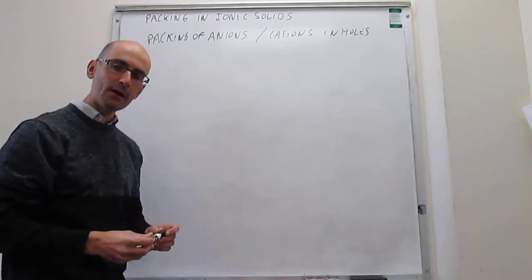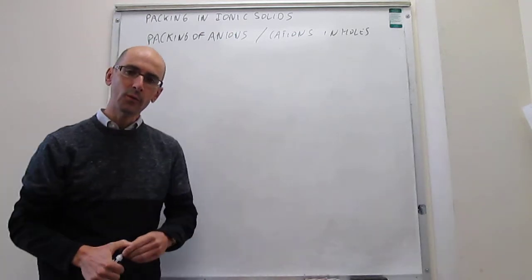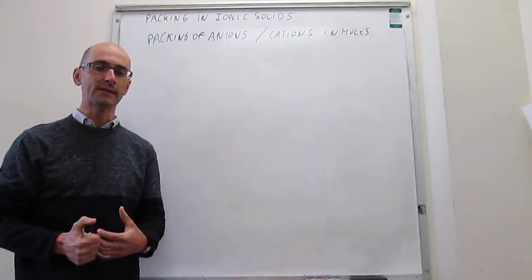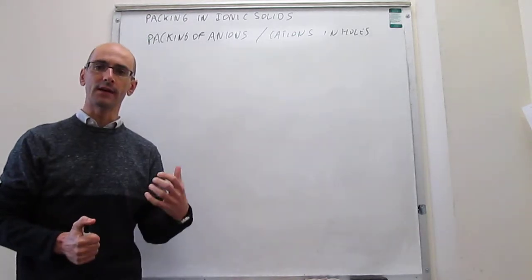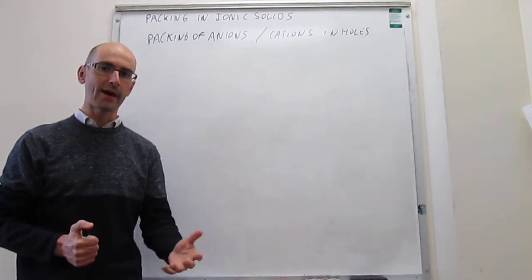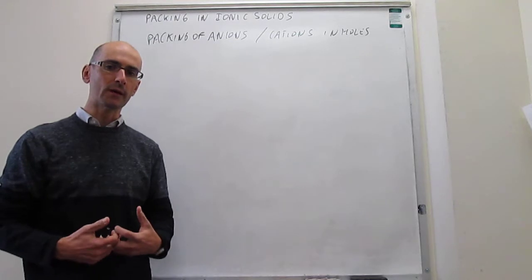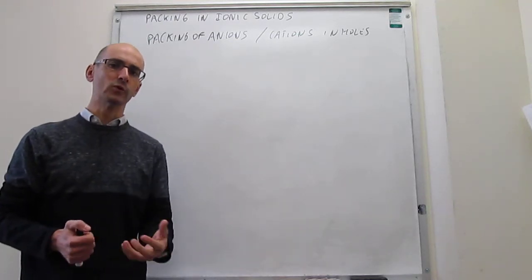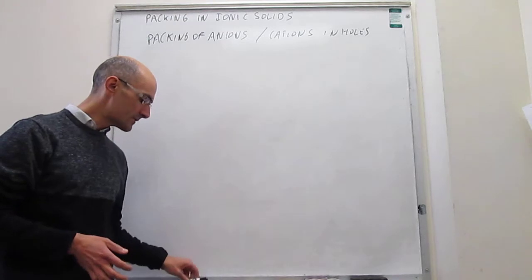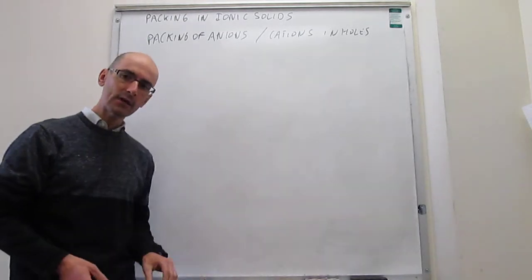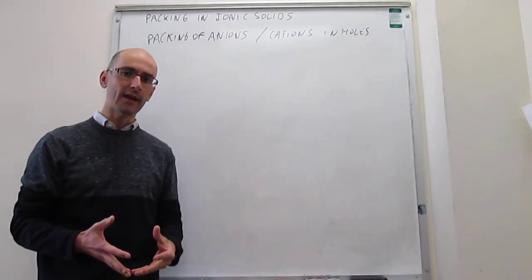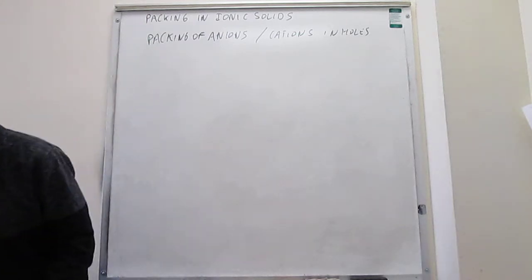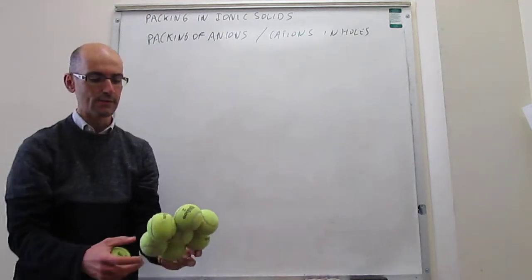This is fairly general. We understand where the anions are going to be — this is going to be exactly the same as metal atoms in regular cubic packings. The question is, what about those holes? Where are the cations? So let's talk about the possible holes that you can get in typical packings, and I'm going to give an explanation of various types of holes.